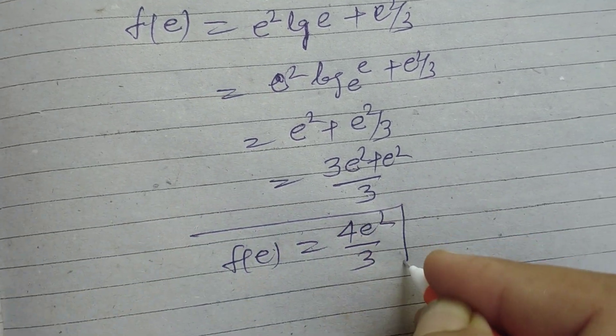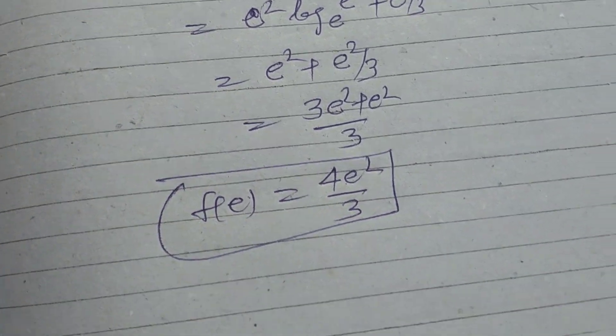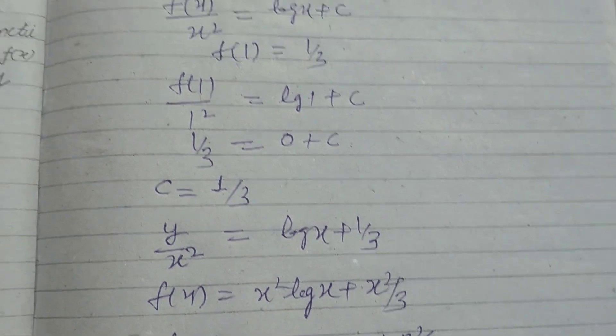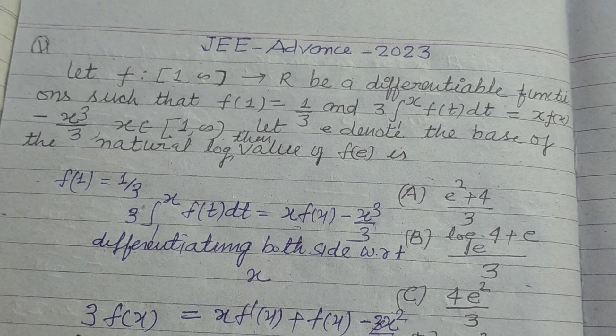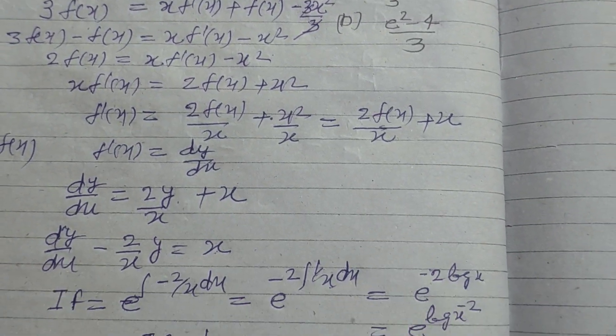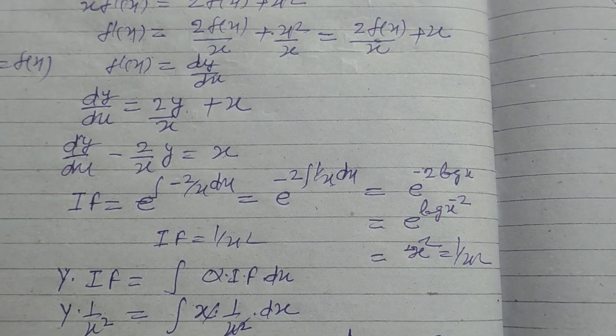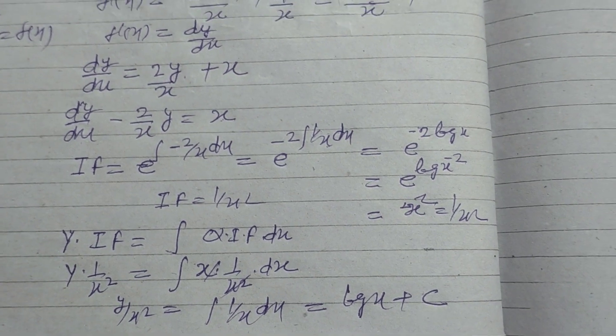Therefore the value of f(e) is 4e²/3. Students, in this way we solve this problem. I hope you got it. This is a simple problem. Please like the video, subscribe the channel. Thanks for watching.